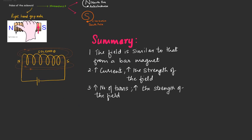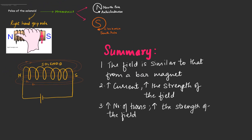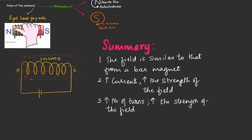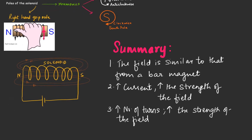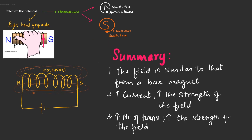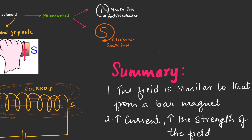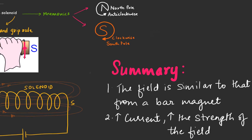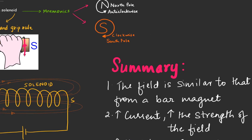Here's a summary: first, the field is similar to that from a bar magnet. Second, if the current increases then the strength of the field also increases. Third, if the number of turns of the coil increases, the strength of the field increases. Remember there are two methods of finding the poles: the right hand grip rule and the mnemonic rule — by writing N and S in a stylish way you can get the directions of the current and determine whether it's a north pole or a south pole.